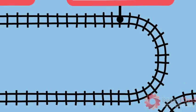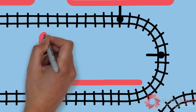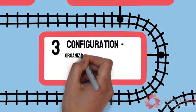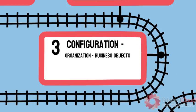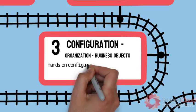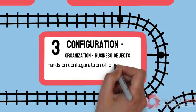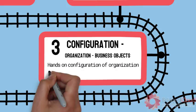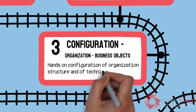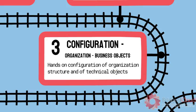The third module is where we get our hands dirty. In this module, we do hands-on configuration of organizational units such as planning plant, and business objects such as functional locations, equipment, and bill of materials.